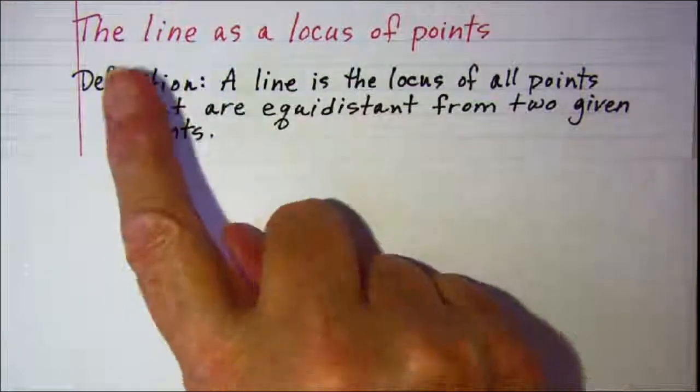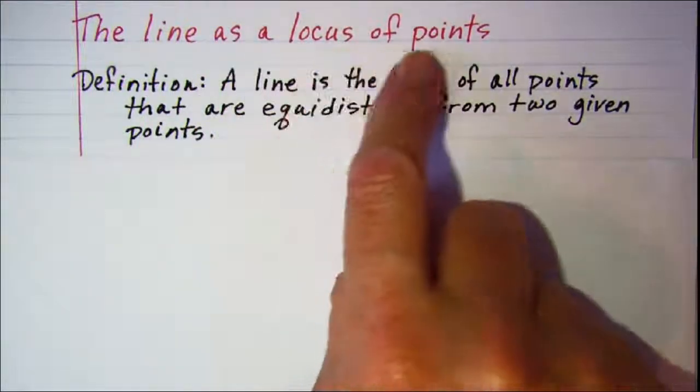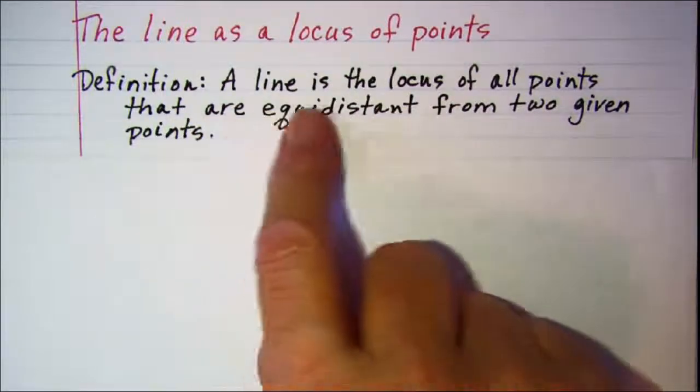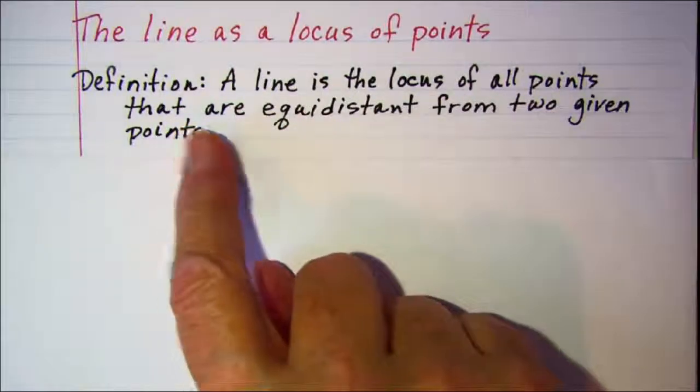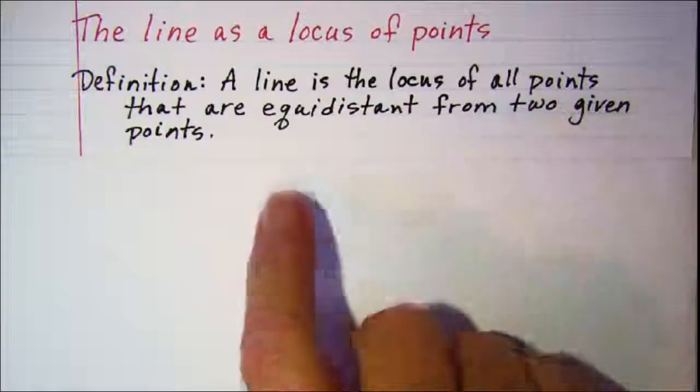In this video we'll be talking about the line as a locus of points. A line is the locus of all points that are equidistant from two given points.